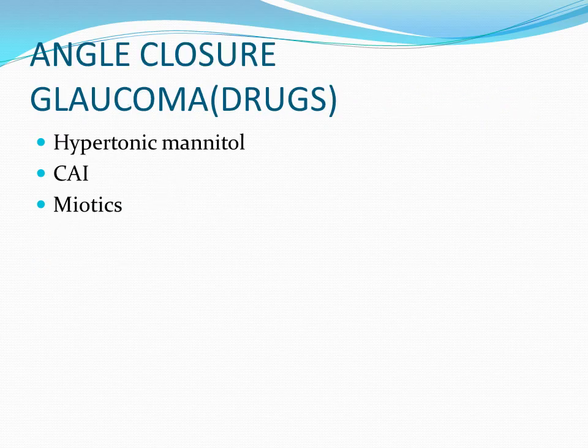Angle-closure glaucoma occurs in individuals with a narrow iridocorneal angle and shallow anterior chamber. Intraocular tension remains normal until an attack is precipitated, usually by mydriasis, causing the tension to rise rapidly to very high values of 40 to 60 mmHg — so vigorous therapy is needed. Hypertonic mannitol 20% can be given intravenously to decongest the eye, or acetazolamide 0.5g IV followed by oral twice daily is started. Once intraocular tension starts falling, pilocarpine 1 to 4% is instilled every 10 minutes and then at longer intervals.